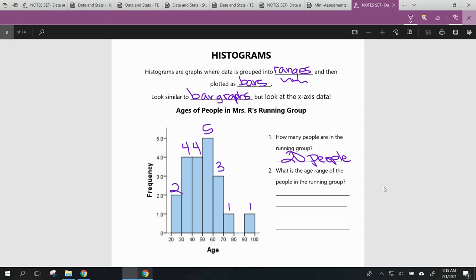What is the age range of the people in the running group? Now this is a tricky question because we don't know the exact age range. The youngest person in this whole group could be 29. The oldest person in this group could be exactly 90. We're not quite sure. So we can answer this question, but we have to give some background knowledge about how we're answering it.